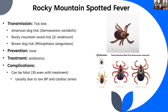RMSF is spread through tick bites — the three most common vectors are the American dog tick, the Rocky Mountain wood tick, and the brown dog tick. There is no prevention. Treatment is antibiotics. In about 3% of cases, even with treatment, RMSF is fatal — usually resulting from low blood pressure leading to cardiac arrest, essentially a sepsis situation.